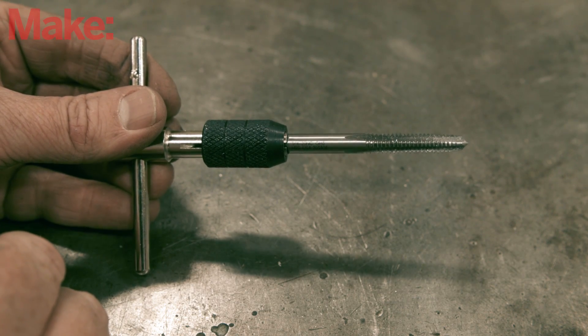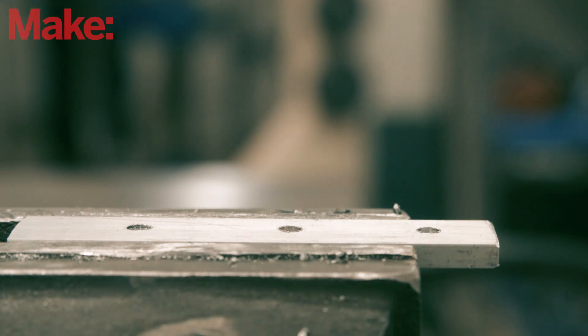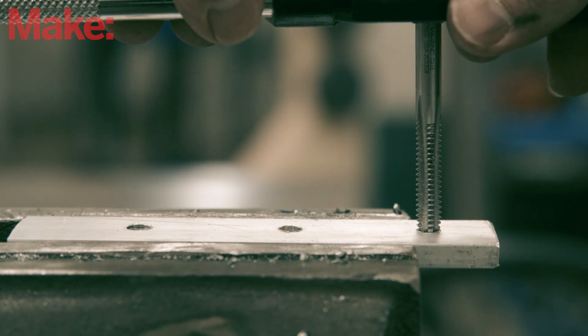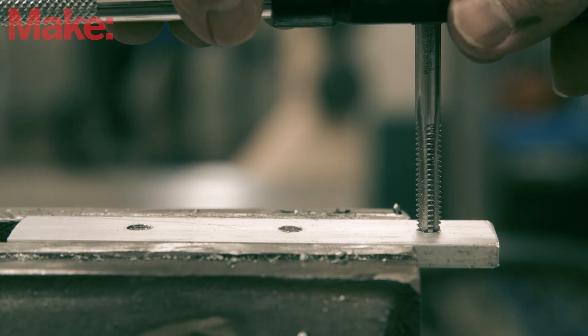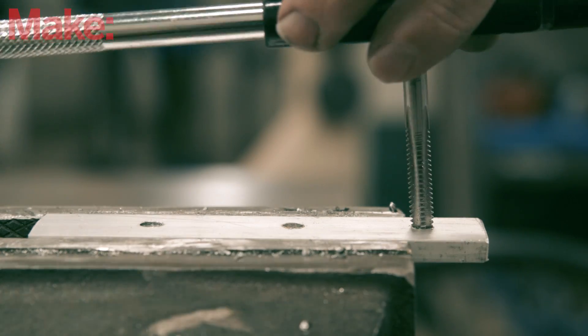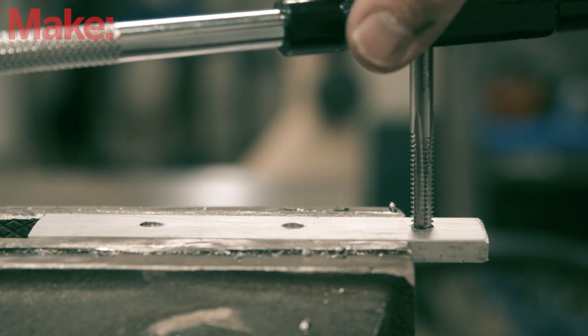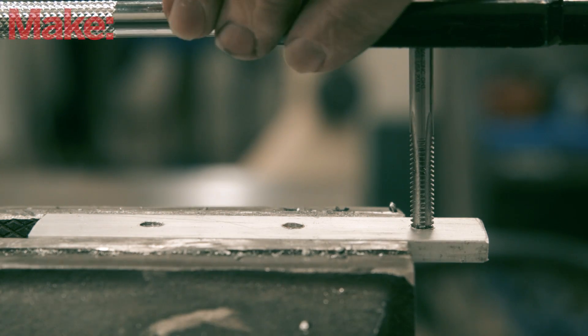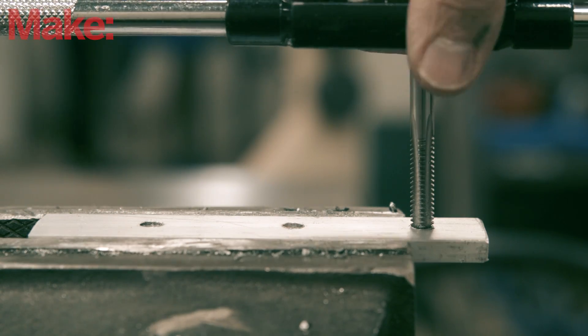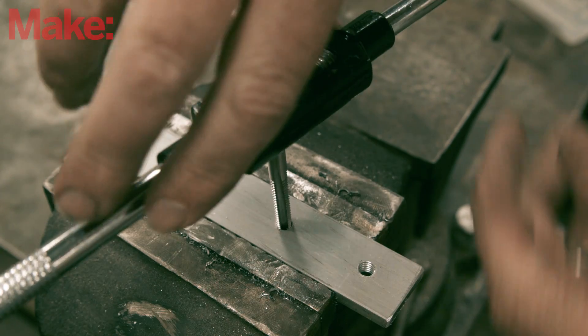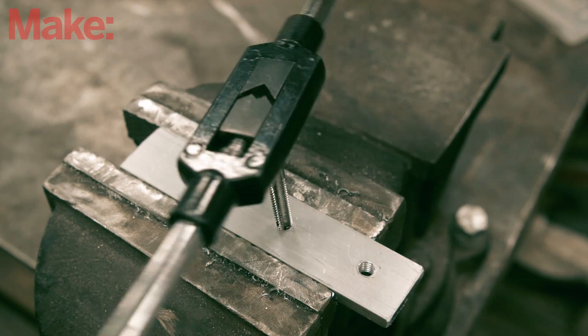Now here comes the tricky part. Line up the tap of the hole, making sure that it's completely perpendicular to the material. Apply slight pressure to the tap and begin turning the wrench. You should feel the cutting threads begin to catch, so double check that the tap is straight and do not force the tap or it may break. After you've made a couple of full revolutions in the material, you can stop applying pressure.